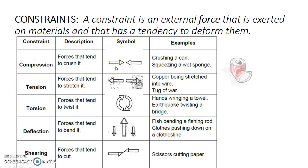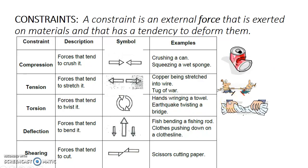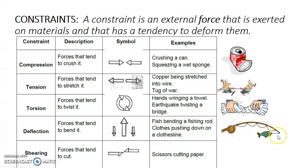We have compression, such as crushing a can; tension, such as pulling on a rope; torsion, which is a rotational movement in opposite directions; deflection, where two forces on opposite ends push toward the middle — we often see that in a bookshelf; and finally shearing, which involves cutting or tearing something apart.